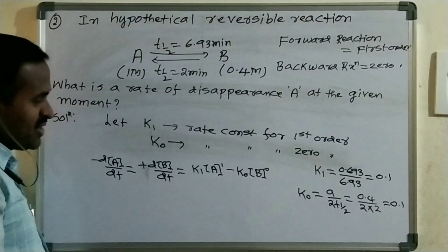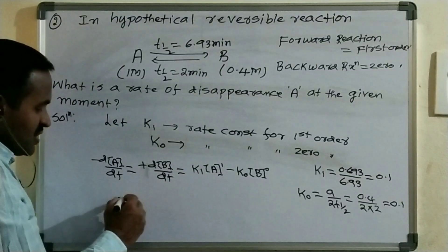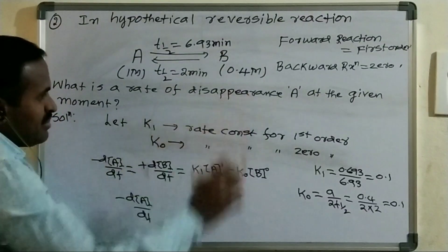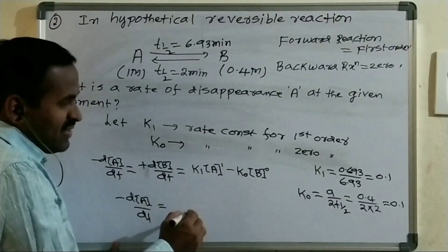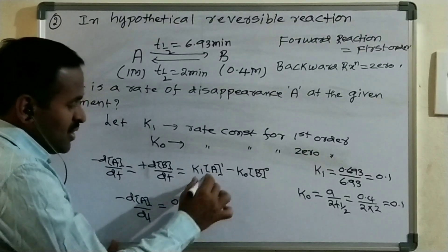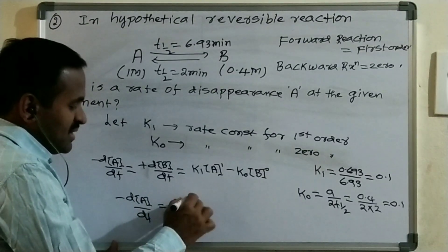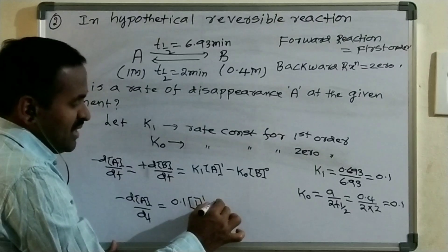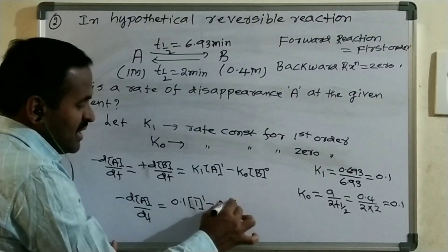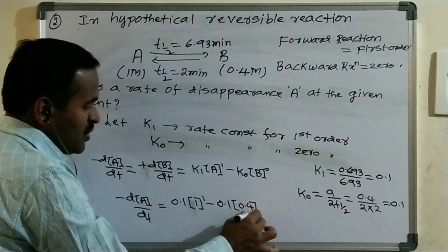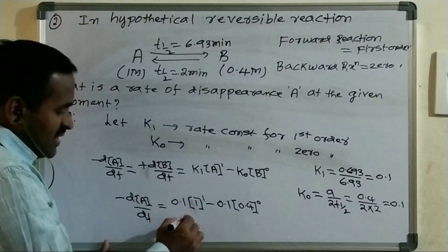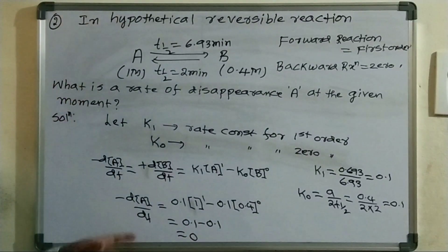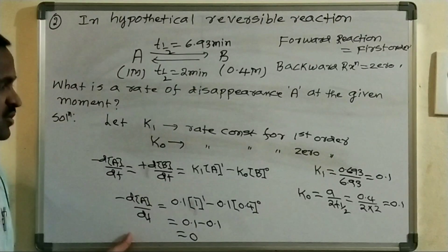Substituting into the equation: minus d[A]/dt = 0.1 × [A]^1 − K0 × [B]^0 = 0.1 × 1 − 0.1 × (0.4)^0 = 0.1 − 0.1 = 0. So the rate of disappearance of A at the given moment is 0.